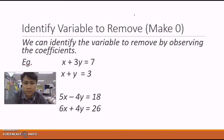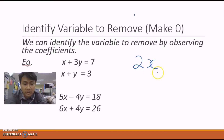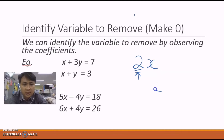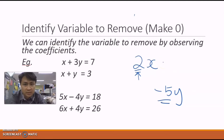Let's look at how to remove a variable. First, we need to understand what a coefficient is. For example, in 2x, the coefficient of x is 2 — it's the number in front of x. For negative 5y, the coefficient of y is negative 5. The coefficient is simply the number before the variable.